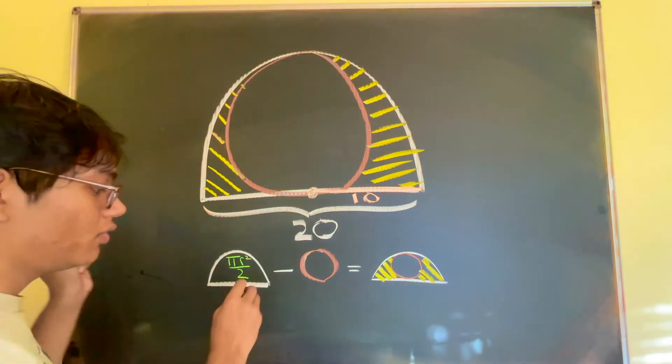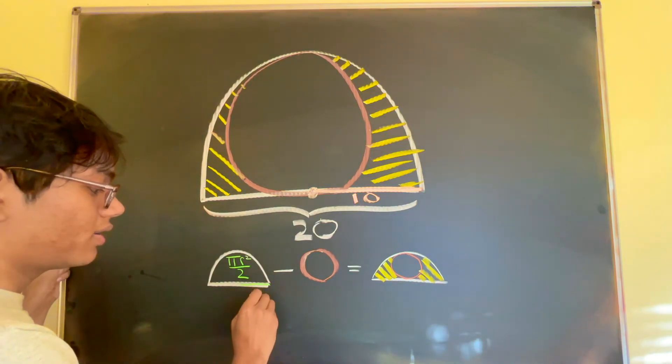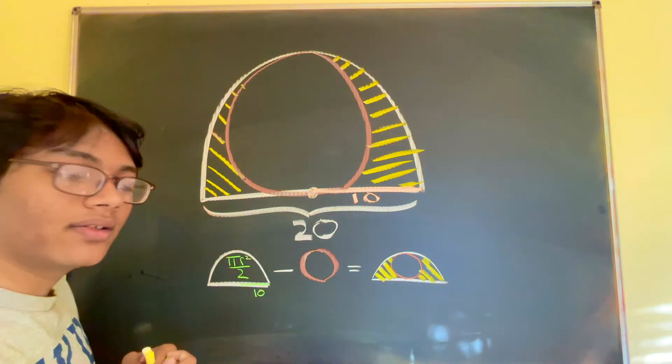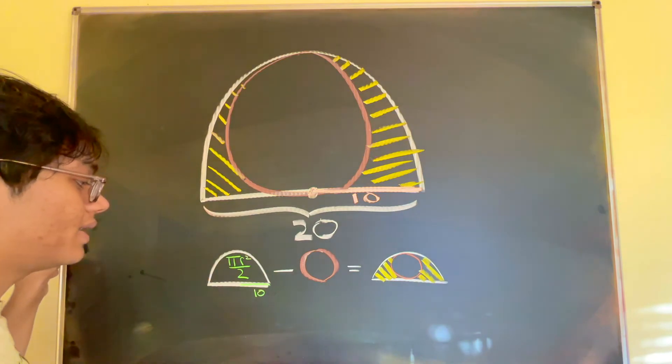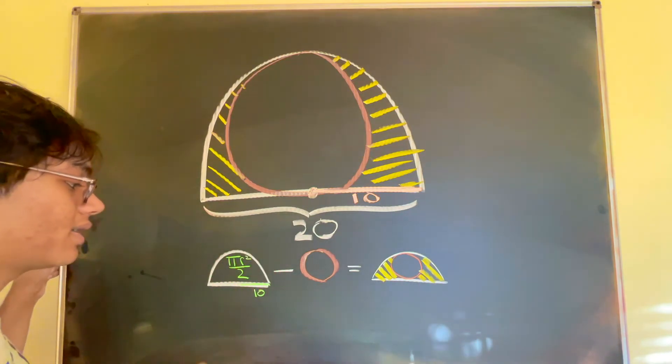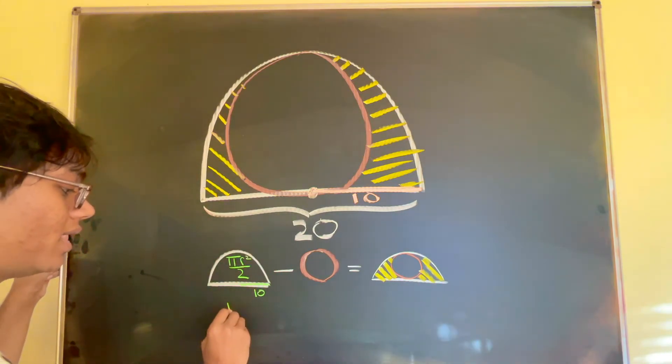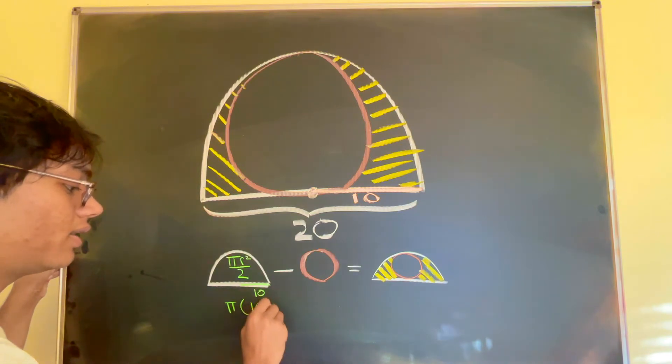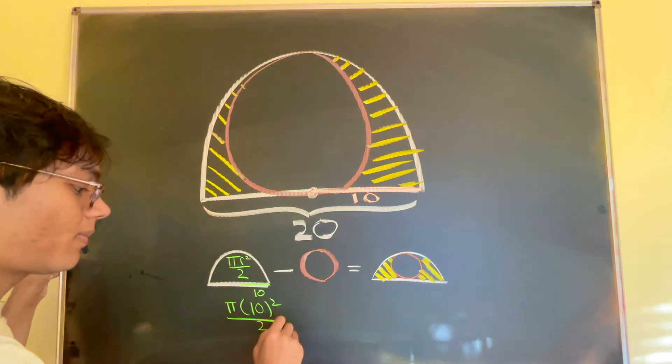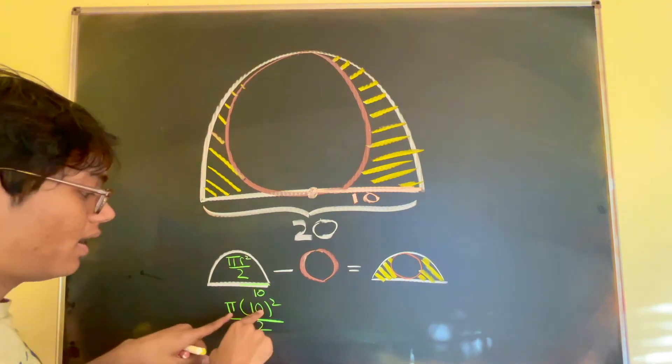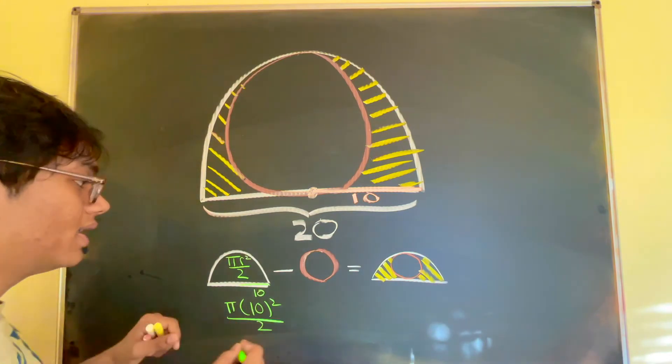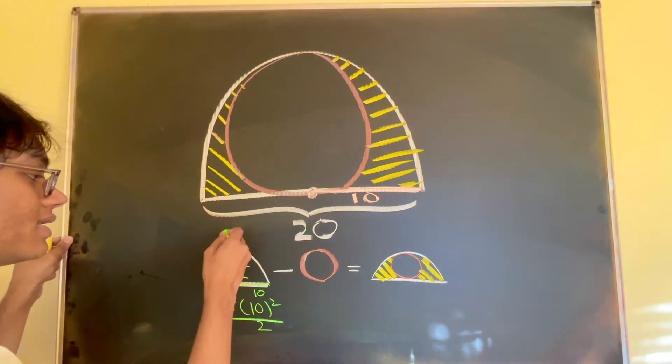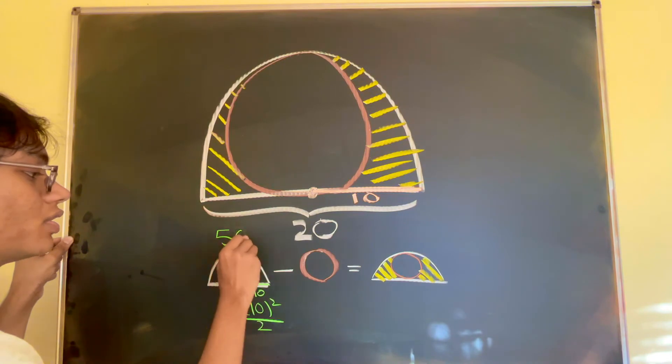Because this is pi r squared over 2 and we know what r is, r is 10, we can find out the area. So this slice, this semicircle slice will have an area of pi times 10 squared divided by 2 which is going to be 100 pi divided by 2 is 50 pi. So this semicircle has a contribution of 50 pi.